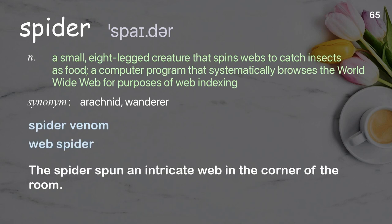Examples: Spider venom. Web spider. The spider spun an intricate web in the corner of the room.